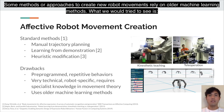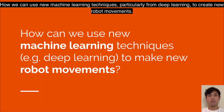Some approaches to create new robot movements rely on older machine learning methods. What we would try to see is how we can use new machine learning techniques, particularly from deep learning, to create new robot movements.